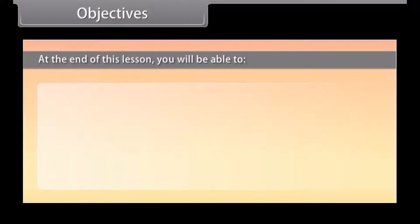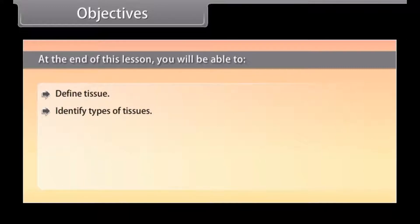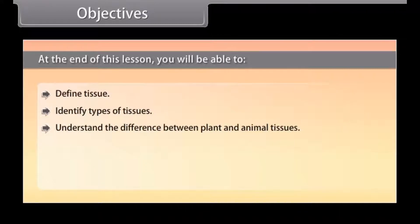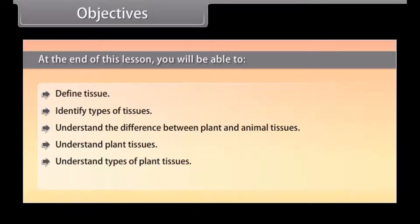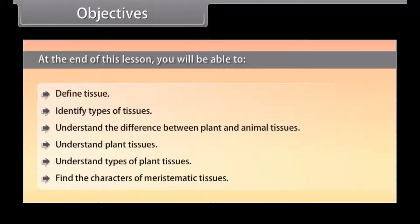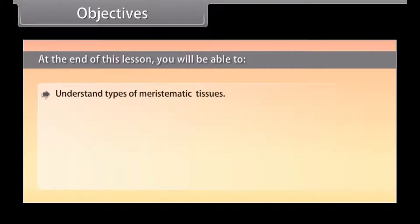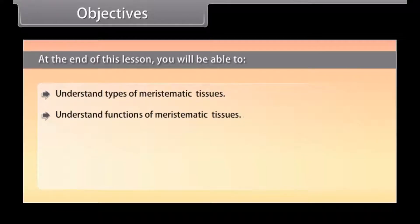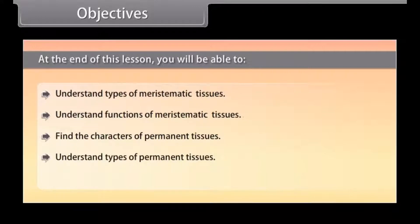Objectives: At the end of this lesson, you will be able to define tissue, identify types of tissues, understand the difference between plant and animal tissues, understand plant tissues, understand types of plant tissues, find the characters of meristematic tissues, understand types and functions of meristematic tissues, find the characters of permanent tissues, and understand types and functions of permanent tissues.